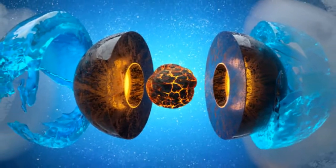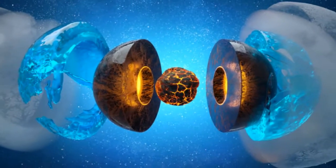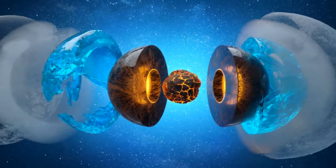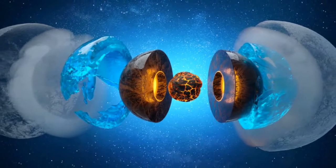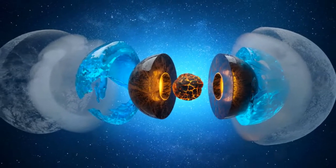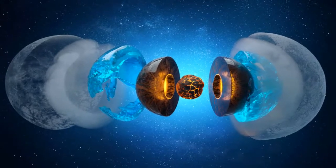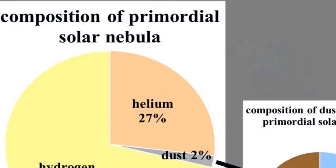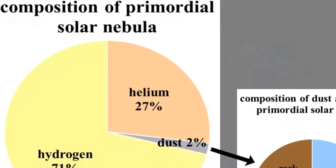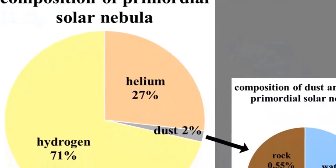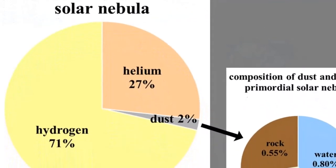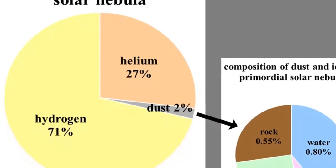The Chemical Compositions of the Planets of our Solar System. The substances that make up the planets are divided into three compositional groups: Gases, Rocks, and Ices, based on their melting points.